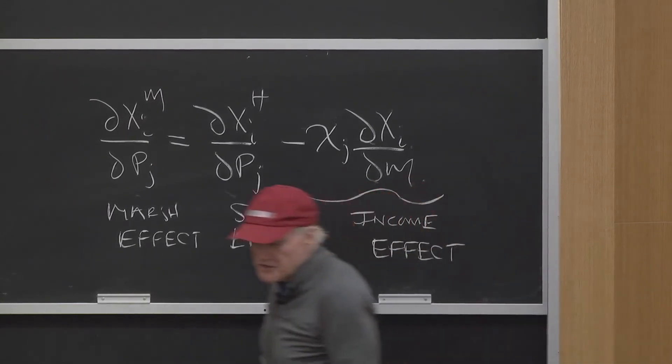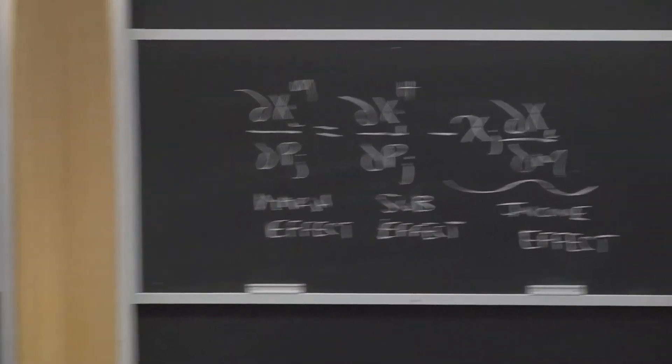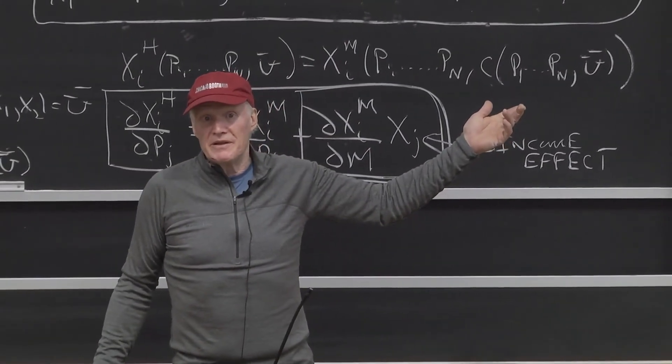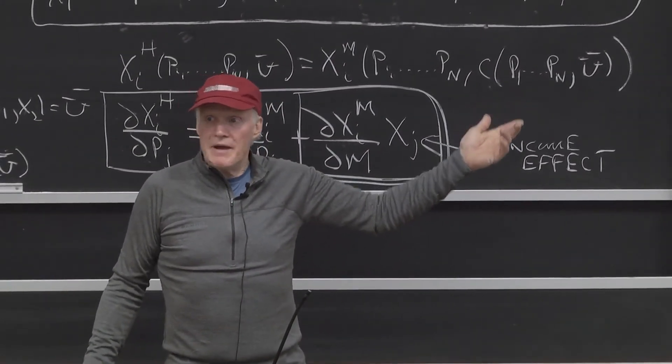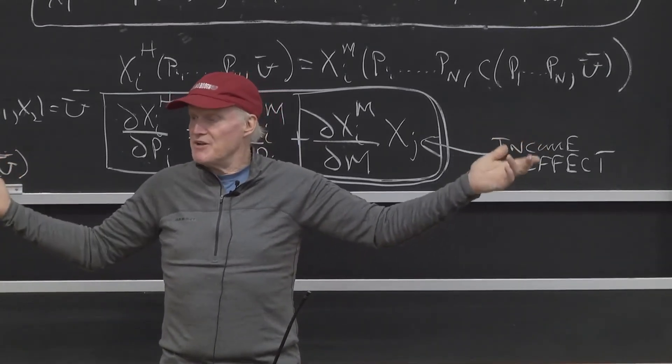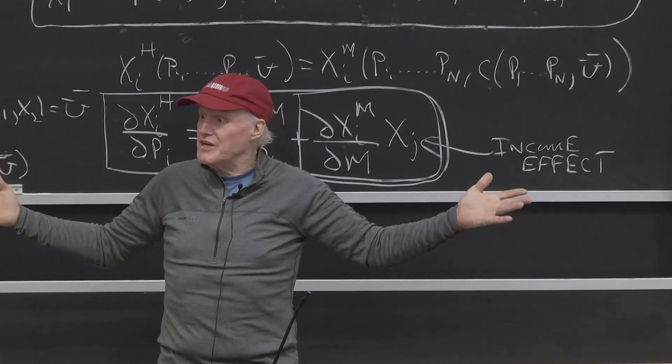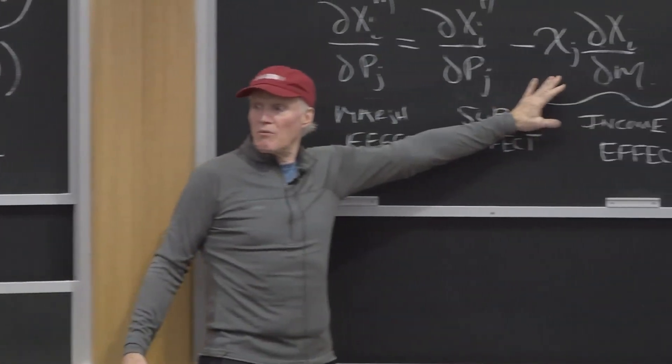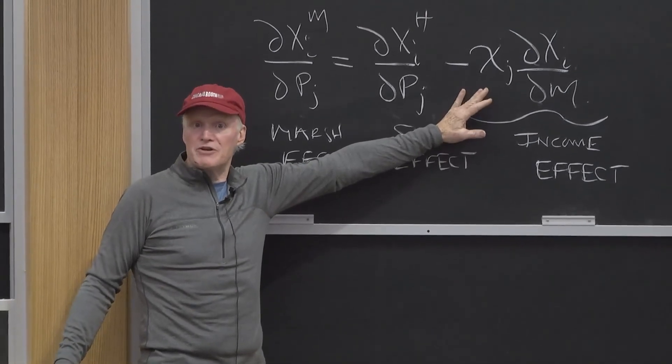What determines whether this income term is big or small is mostly how important is good J in my budget. If I make $100,000 a year, this $10 change in annual income is really a trivial change in my income. And this income effect is probably going to be very, very small. Probably too small to even think about measuring.